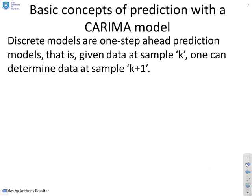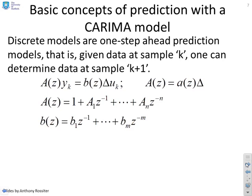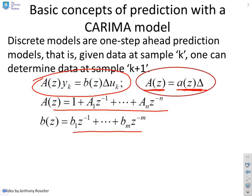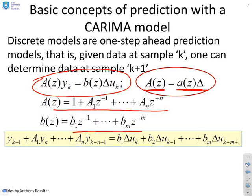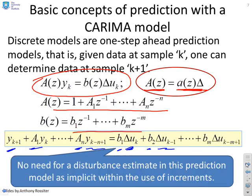Let's get on with prediction. Discrete models are one-step-ahead prediction models. Given data at sample k, we can determine data at sample k plus 1. Here's the model: capital A(z)y equals b(z)delta u, where capital A is defined as little a times delta. Let's expand those out in terms of powers of z inverse. Then if I write down my difference equation model, you get yk+1 plus capital A1yk all the way down to capital Anyk-n+1 equals b1 delta uk plus b2 delta uk-1 and so on. The key thing here is there's no need for a disturbance estimate in this prediction because it's implicit in the fact that you've used incremental variables. If we assume that the disturbance is not time-varying, once we've gone to incremental model, the disturbance disappears.